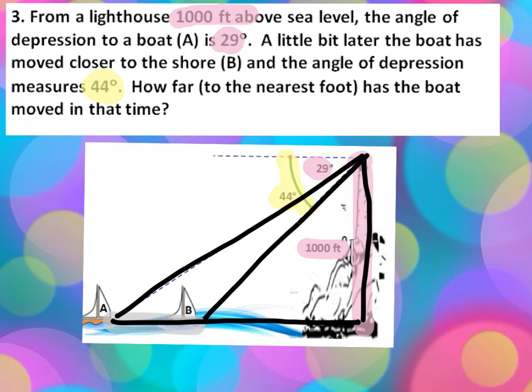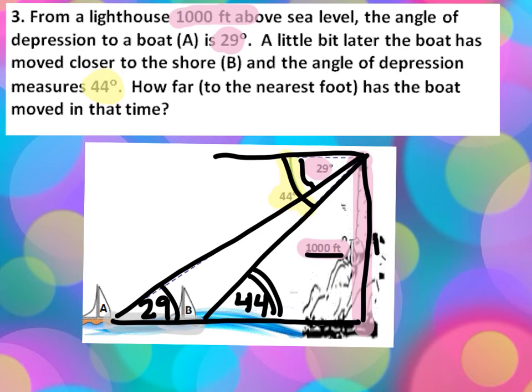Now, the 44 degree, well, let's start with the 29. The 29 degrees can be placed here. Do you see the alternate interior angles there, the 29? And this 44 provides us a 44 here as well. So we have an angle of 29, an angle of 44 here. And this 1,000 is still 1,000 feet here.